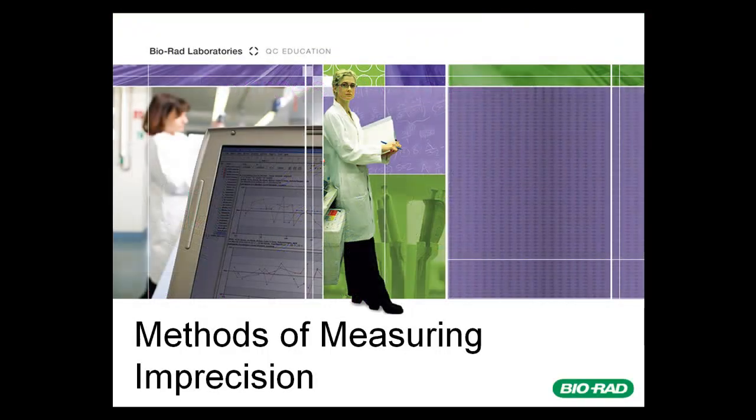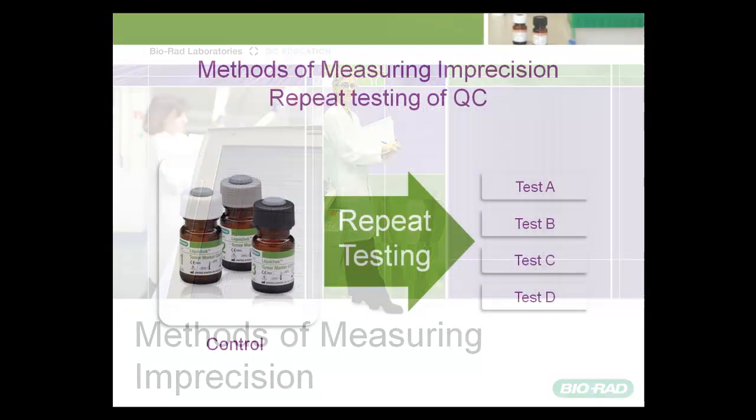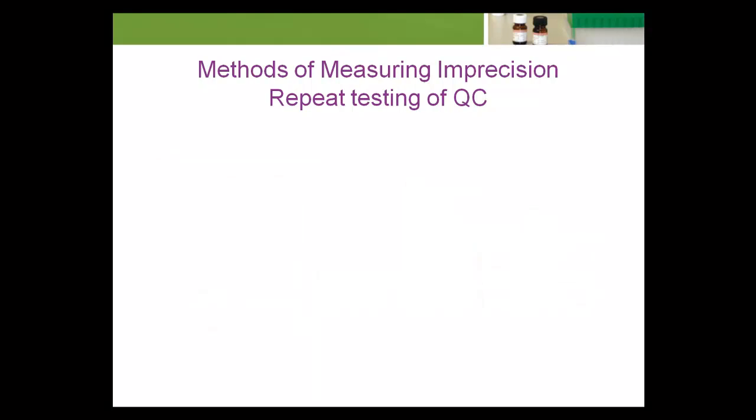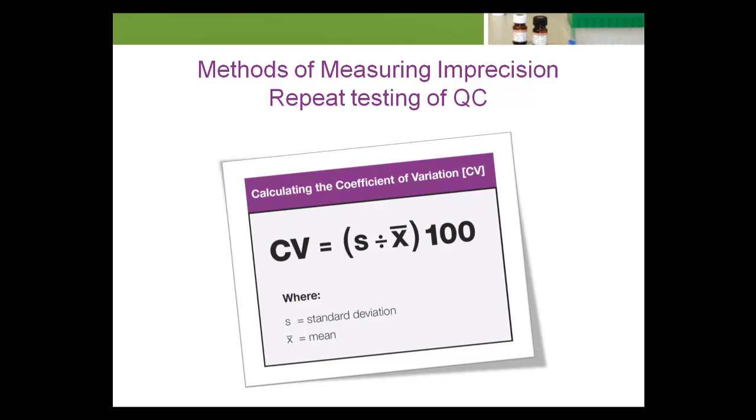Now that you have an understanding of what causes imprecision, we'll look at methods of measuring imprecision. One way of measuring imprecision is using data collected from repetitive testing of quality control materials. This method provides a good estimate of long-term random variation in actual everyday practice. The laboratory uses the data collected to calculate imprecision expressed as the coefficient of variation (CV).